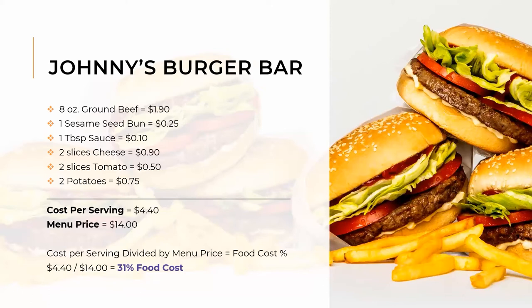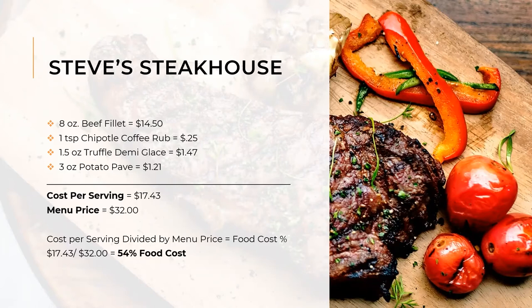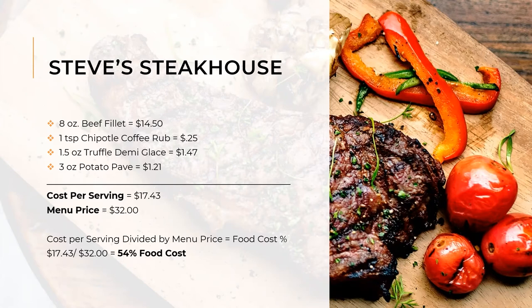Let's go over the more expensive version. Steve's Steakhouse is a high-end steakhouse — their cost is higher due to the menu selections. This is where menu balance is key to ensure there is a profit being made. In this example, we have an 8-ounce filet mignon with all of the fixings, which is a much larger food cost item. Steakhouses can run a food cost percentage close to 38%, while a restaurant that serves primarily pasta might run around 28%. In this example, Steve's Steakhouse is running a 54% food cost.